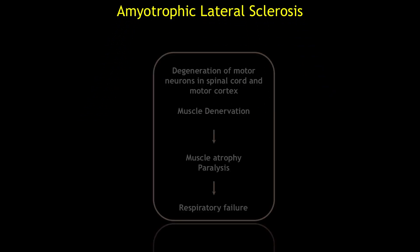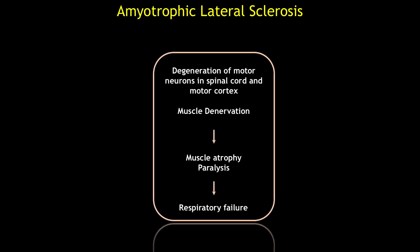ALS, also known as motor neuron disease or Lou Gehrig's disease in the US, is primarily characterized by the progressive loss of motor function, which ultimately results in paralysis. The cause of this paralysis is the degeneration of a class of neurons called motor neurons. About 10% of ALS cases are inherited or familial, and the identification of mutations in these causative genes has been instrumental in understanding the mechanisms underlying the disease.